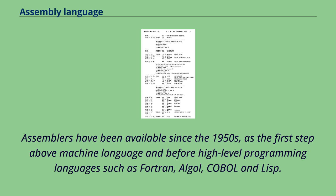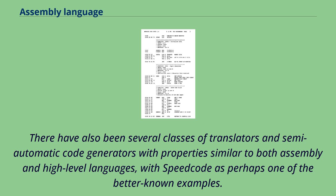Assemblers have been available since the 1950s, as the first step above machine language and before high-level programming languages such as Fortran, Algol, COBOL and Lisp. There have also been several classes of translators and semi-automatic code generators with properties similar to both assembly and high-level languages, with speed code as perhaps one of the better known examples.